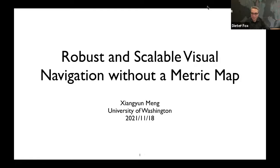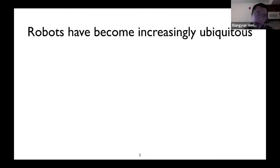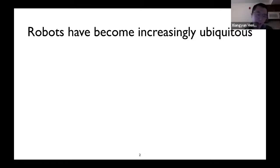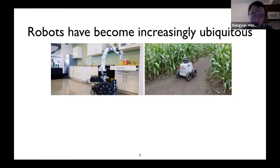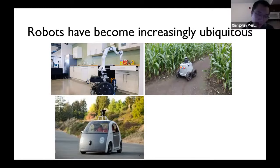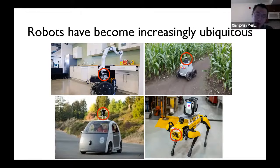Thanks, Dieter. My name is Xiang Yun. Today I'm going to give you an overview of a series of work we did recently on robust and scalable visual navigation without a metric map. Robots have become increasingly ubiquitous — we have home robots that help with arranging items, agriculture robots that monitor crops, self-driving cars, and agile legged robots for search and rescue. All these different robots share a common sensor — typically a LiDAR or RGBD camera — because the robot needs to use this sensor to reconstruct the environment so it can navigate.